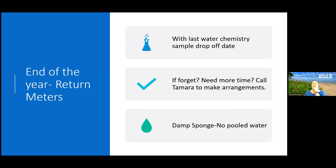At the end of the year, when you turn in your last water chemistry sample — your phosphorus sample, usually in September for most of the state and August for the northern part — the easiest thing is to bring your dissolved oxygen meter in at the same time. Last year a lot of people did not do that, so try to mark that on your calendar. If you're in the UP or in more northern areas and want to measure dissolved oxygen further into September, just call to make arrangements. Always make sure the sponge is damp and not pooled with water — tap water is fine as long as it's clean.